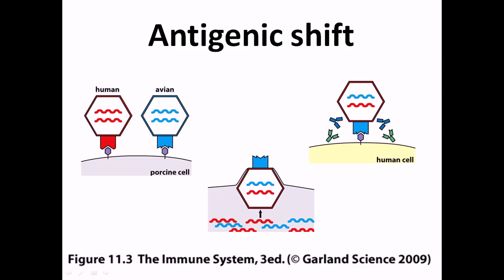Now let's look at antigenic shift in detail. In antigenic shift, different types of genetic material accumulate inside the same virus. Consider a secondary host cell that has a surface receptor for a virus, and two different strains — a human strain and an avian strain — of that same virus attack the secondary host using their hemagglutinin spikes (shown in red and blue). Once inside, the virus replicates its genetic material, and the genetic segments from the human genome and the avian genome begin to recombine.